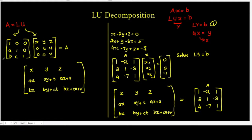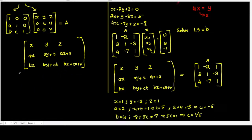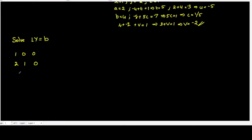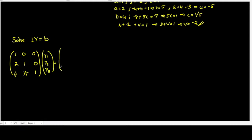Looking at the factorization, the full L matrix has third row entries B equal to 4, c equal to 1/5, giving L as 1, 0, 0; 2, 1, 0; 4, 1/5, 1. We are solving Ly equal to B, so Y is the vector y1, y2, y3, equal to B which is 0, 5, minus 1.